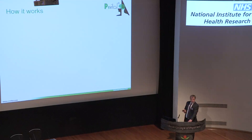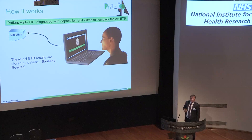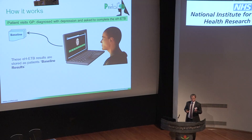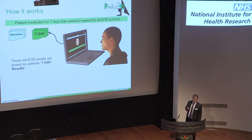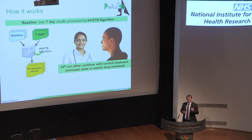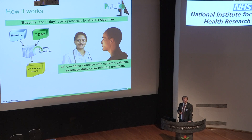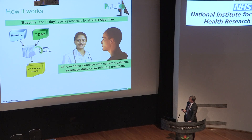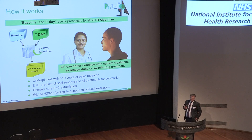In practice: a patient visits their GP, is diagnosed with depression, and before taking their first antidepressant they do this test at home to give a baseline measurement of negative emotional bias. Seven days later they repeat the test, and a machine learning algorithm determines whether they're responding or not. That result is fed back to the GP to inform whether to continue, increase the dose, or switch medication.